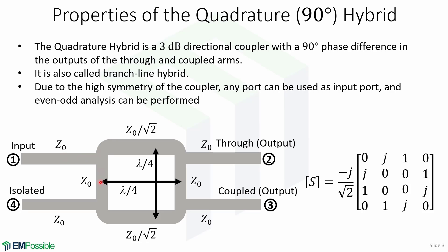The four ports are connected to each other by four different transmission lines that make its distinctive square shape. The top and bottom transmission lines have length lambda over 4 and impedance of Z0 over square root of 2, and the side transmission lines have impedance Z0 and length lambda over 4. We can observe that the Quadrature-Hybrid has a high degree of symmetry, and any port can be used as an input port. The output ports are always on the opposite side of the junction from the input port, and the isolated port will be the remaining port on the same side as the input port.